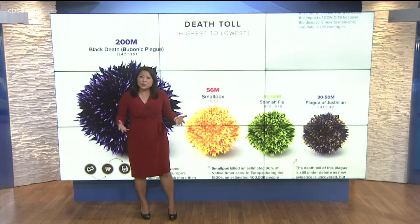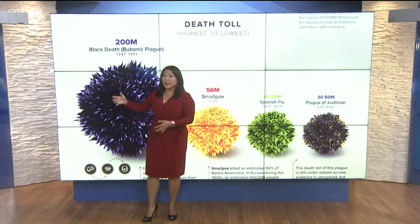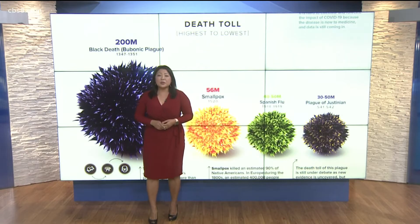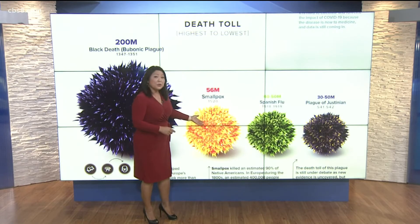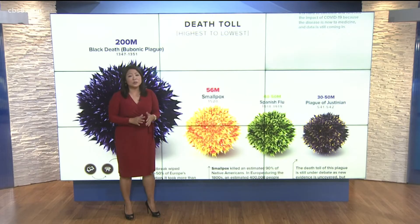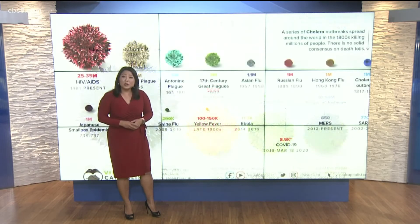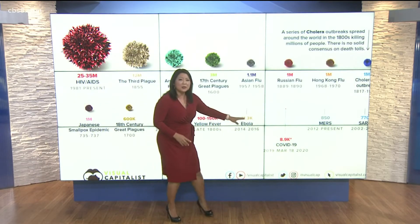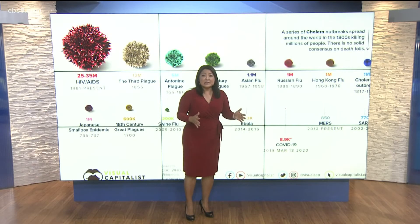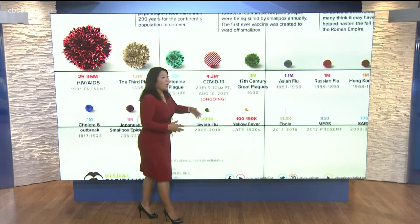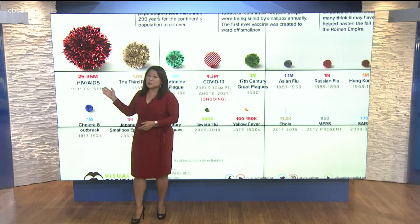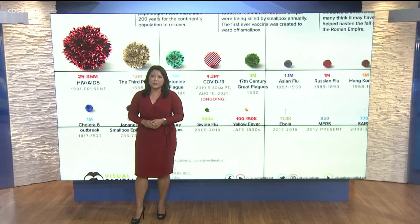In terms of the death toll from highest to lowest: the bubonic plague, which was spread by fleas, killed 200 million people in the 1300s. Smallpox in the 1500s killed an estimated 56 million, the majority children. Back in March of 2020, COVID-19 was all the way down here toward the end of the timeline with those 9,000 deaths. Today, it has moved all the way up the timeline, just a few spots down from HIV-AIDS, which has killed 25 to 35 million.